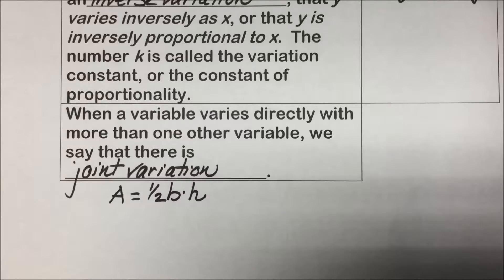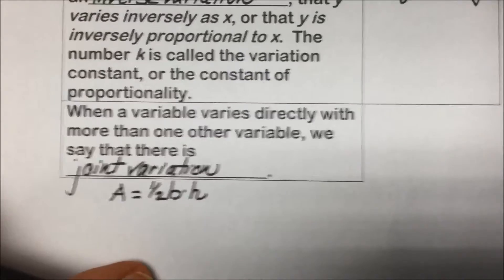Joint variation is one form of combined variation. In general, when a variable varies directly and or inversely at the same time with more than one other variable, this is called a combined variation.